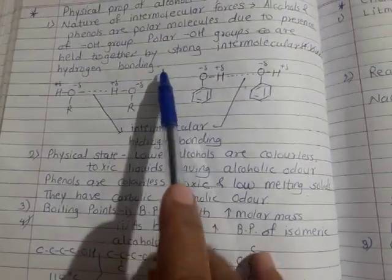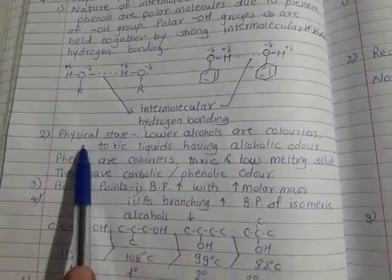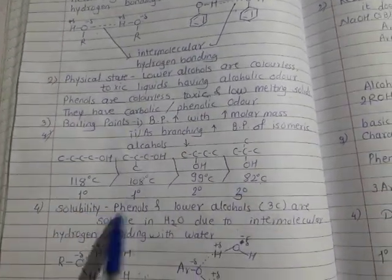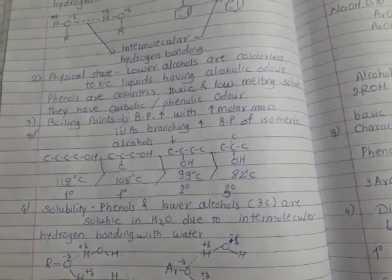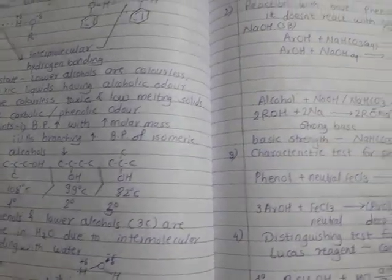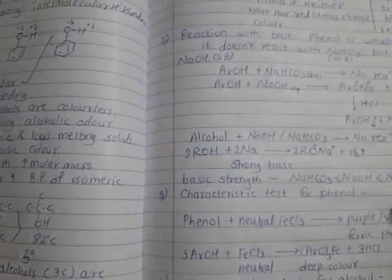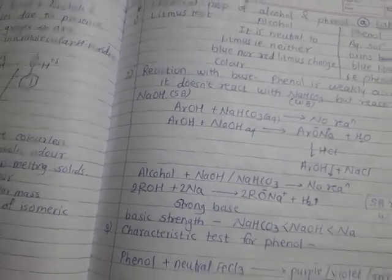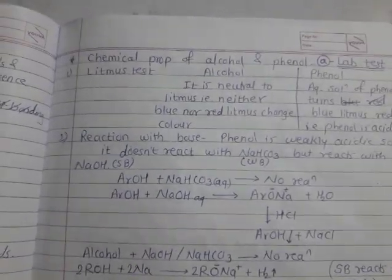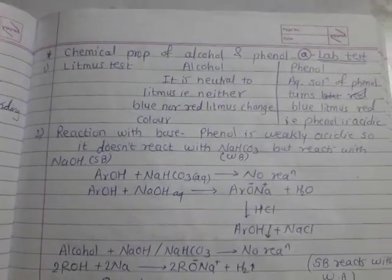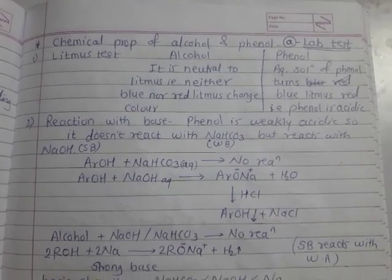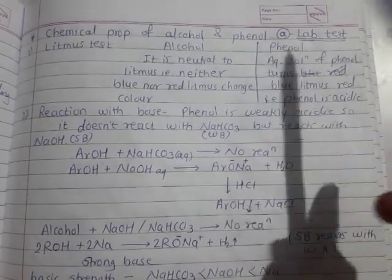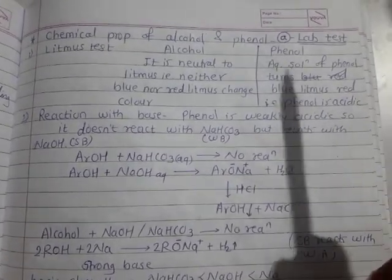To summarize, the four physical properties are: first, the nature of intermolecular forces; second, physical state; third, boiling point; and fourth, solubility. Now we will move towards the chemical properties of alcohols and phenols, where reactions are given under points A, B, C, D.